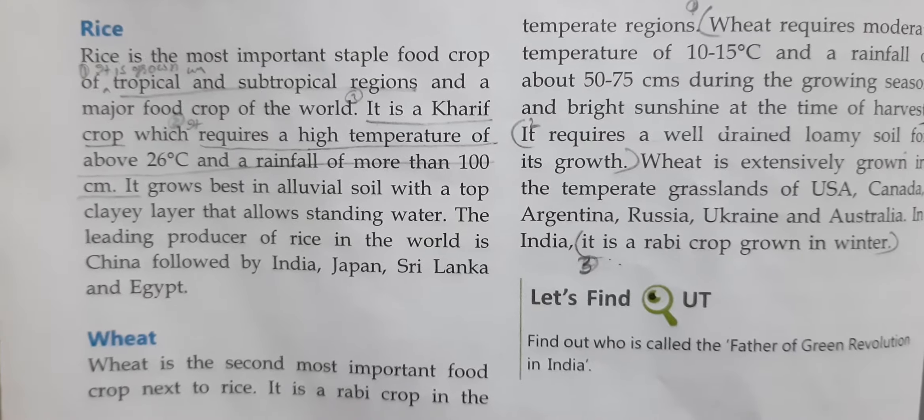The millets are known as coarse grains as they can be grown in areas of less fertile soil with low rainfall. They grow in areas of high to moderate temperatures. Three examples of millets are ragi, bajra, and jowar. Some of the leading countries where millets are grown are India, Nigeria, and China.